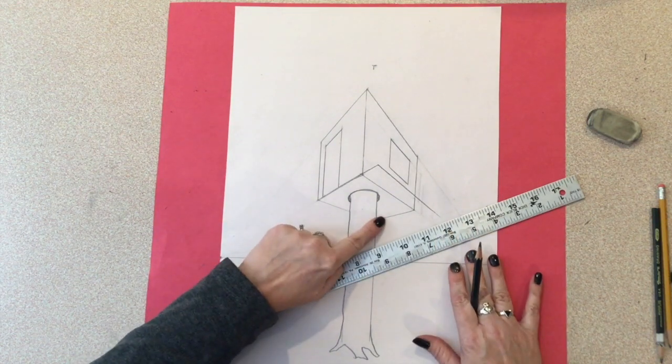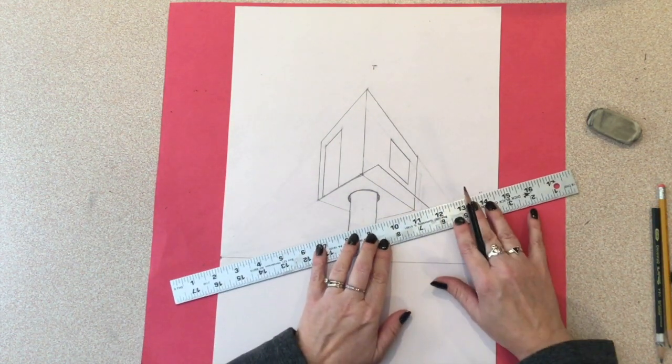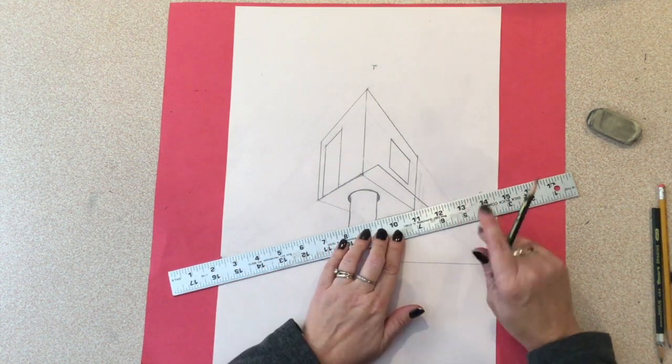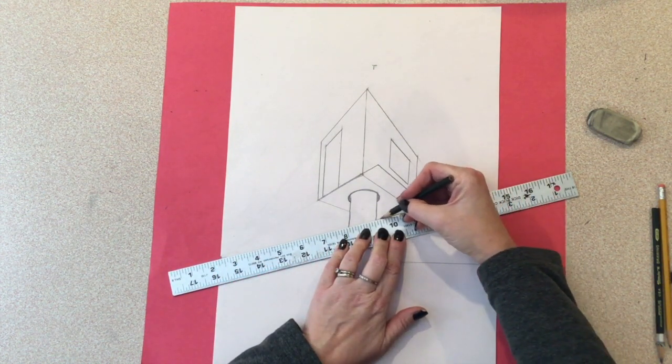Connect your ruler to the vanishing point on the left once again to finish off that corner on the right. I know that is a lot of words, so hopefully, the picture makes sense.